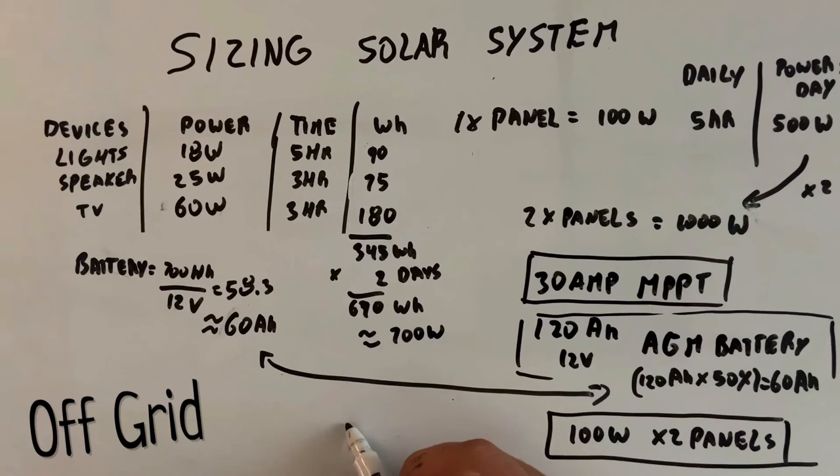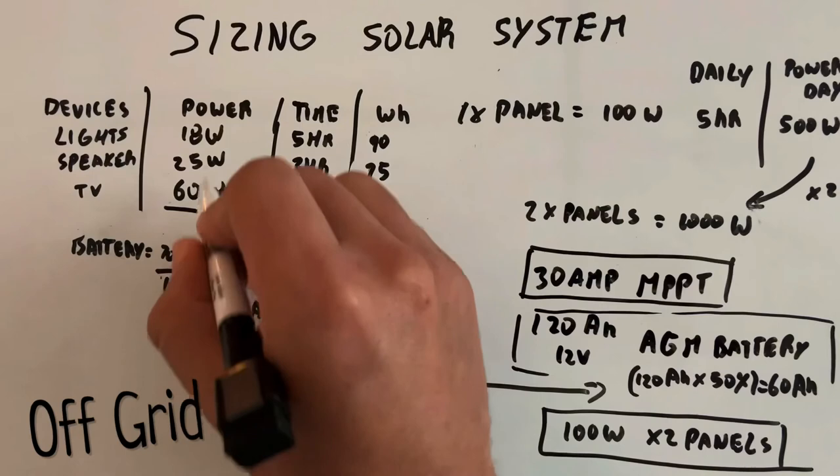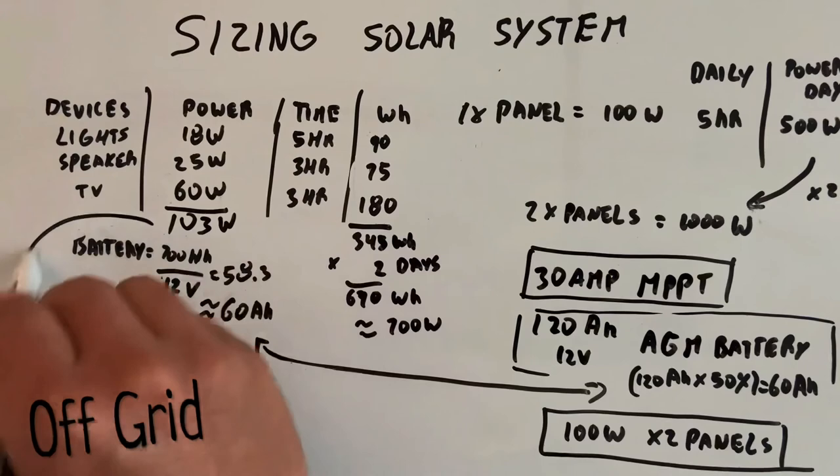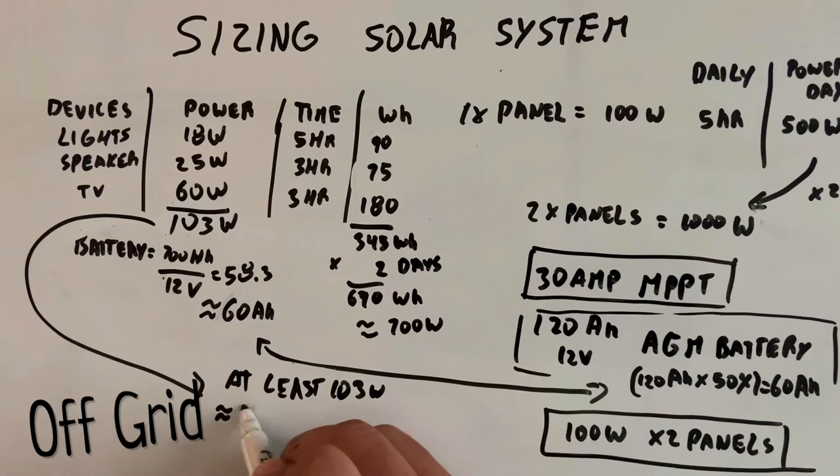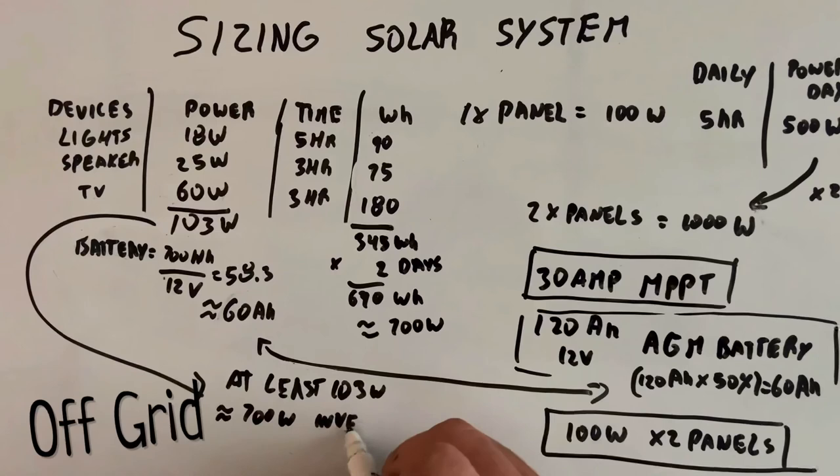So to find the right size, we add up all the devices that are going to be run. So we have 103 watts that are going to be running at the same time. So at least 103 watts. So I'm going to get a 700 watt inverter. It's going to give you room for other devices if I want to add that in the future.